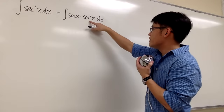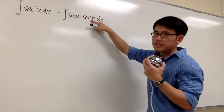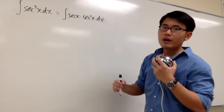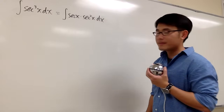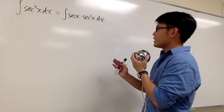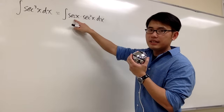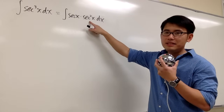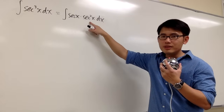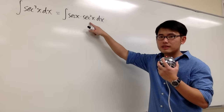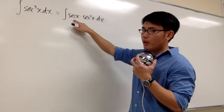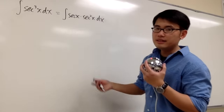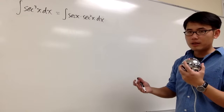Even though there's an identity for secant squared x — it's the same as tangent squared x plus 1 — that won't help us out. Here's another strategy: let's look at what we have, namely secant x and secant squared x. Notice secant squared x is pretty easy to integrate, and it's also pretty easy to differentiate secant x. In this situation, let's try to use integration by parts.